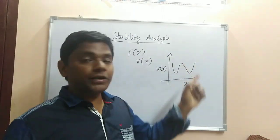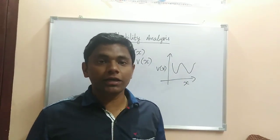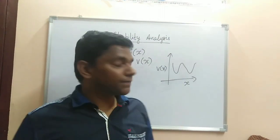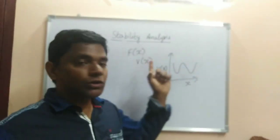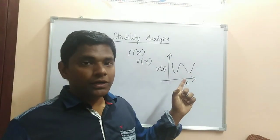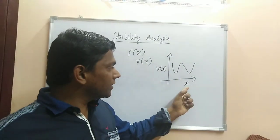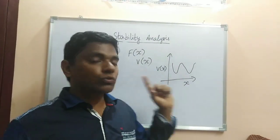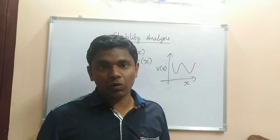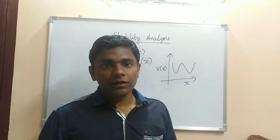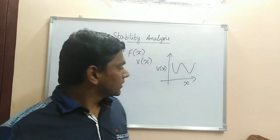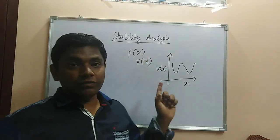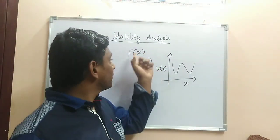It is not compulsory that you get only this kind of pattern — you can get any type of pattern depending on the type of motion the body is in. This is the graph between x and V(x). The potential energy of the body depends only on the x-coordinate, and we need to find the type of equilibrium.